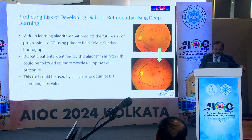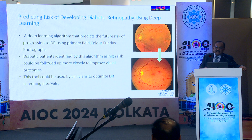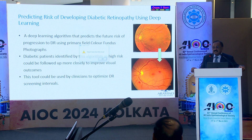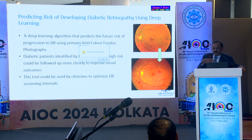Another interesting capability of AI is predicting the risk of developing diabetic retinopathy. A diabetic patient with no current retinopathy can have their fundus photo submitted to the algorithm, which can predict the likelihood they will develop diabetic retinopathy in the next five years. Identifying those high-risk patients allows closer follow-up and better diabetic control, compared to those less likely to develop retinopathy.